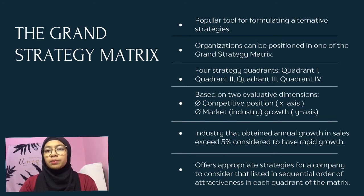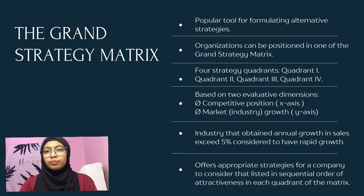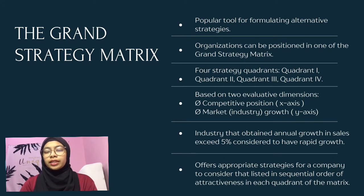All companies and divisions can be positioned in one of the Grand Strategy Matrix's four quadrants. This strategy is broken into four quadrants by an x and y axis. Each quadrant represents a combination of a company's competitive position and growth of the market. The x axis represents the company's competitive position, with the left side indicating weak competitiveness and the right indicating strong competitiveness.